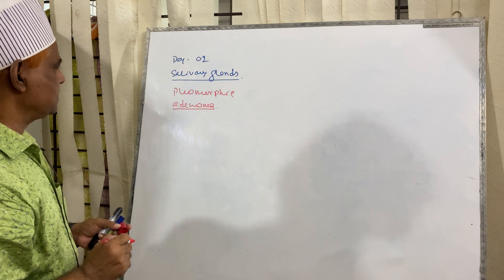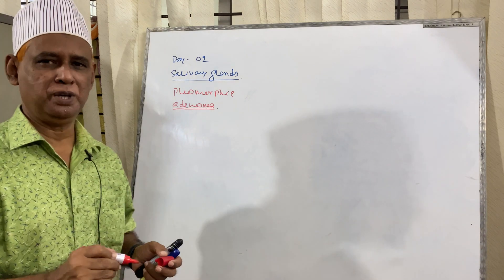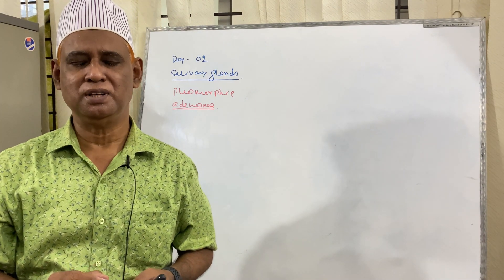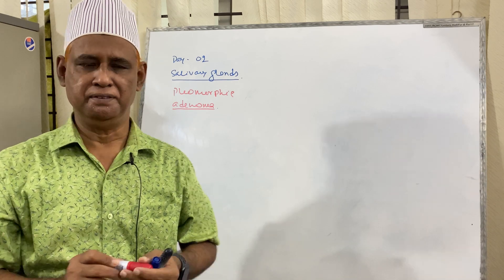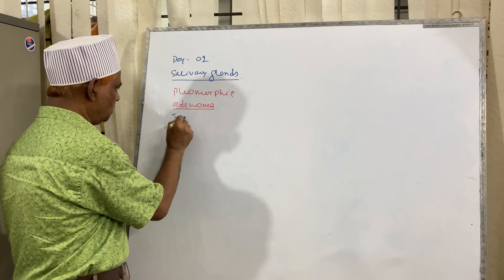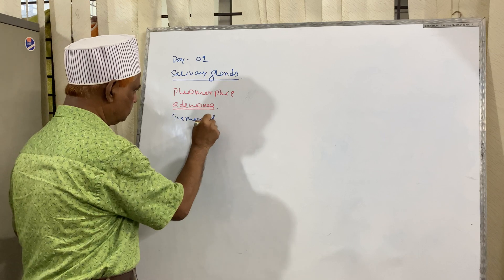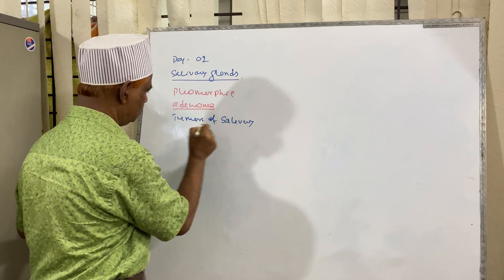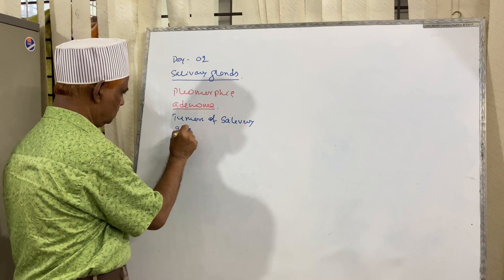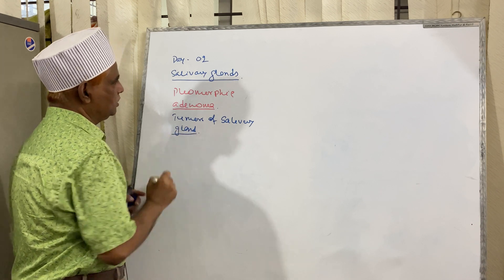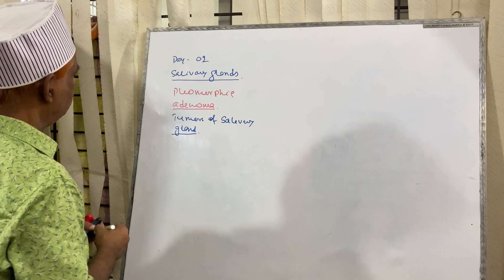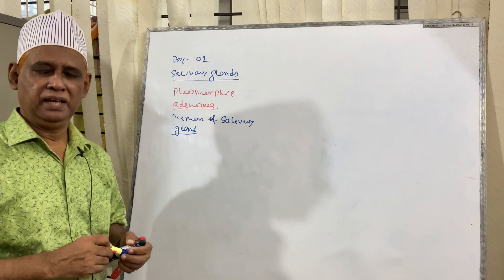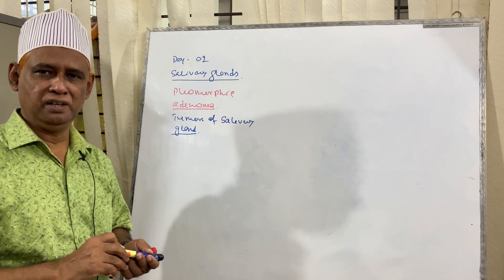Before discussing Pleomorphic Adenoma, let us recapitulate the different types of tumors that may occur in the salivary gland. The tumors may be epithelial tumors and other than epithelial tumors.